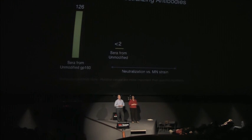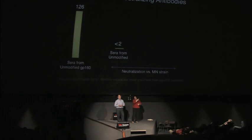To look at that, you can immunize animals with the unmodified GP120—in this case from one strain—and you'd see that the antibodies have good neutralization, measured at 126, against that same strain. But if you take that same sera and try to neutralize another strain, it has no neutralizing activity at all—less than detectable.